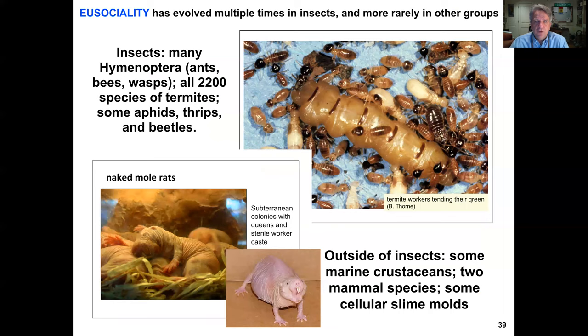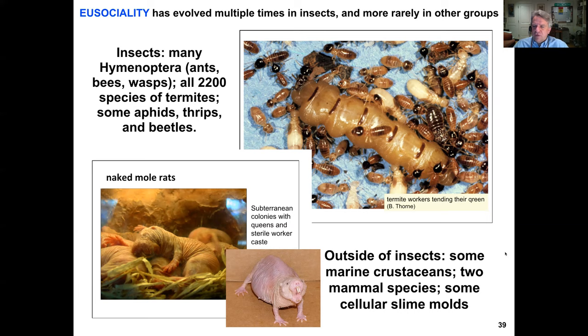Eusociality has evolved multiple times in insects — many hymenoptera, which includes ants, bees, and wasps — as well as all 2,200 species of termites, some aphids, some thrips, and some beetles. Outside of insects, we find it in some marine crustaceans, two mammal species including the naked mole rat, and some cellular slime molds.